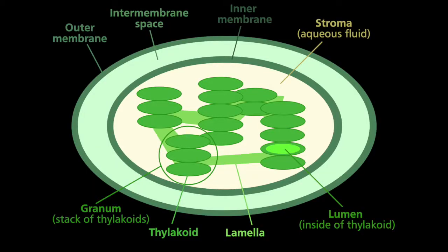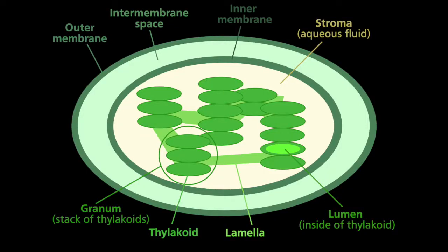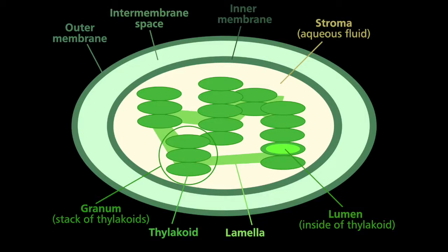If you look at a chloroplast, you have the stroma — the fluid-filled inner part — and the thylakoids, which are stacked in what's called a granum, or multiple grana. A thylakoid is like a pancake, a granum is like a stack of pancakes, and multiple grana are like multiple stacks of pancakes. Inside each thylakoid is the thylakoid lumen. 'Lumen' is a useful biology term — it refers to the inside of any membrane-bound structure, like an artery or vein. The chloroplast also has an inner membrane, intermembrane space, and an outer membrane, just as we saw for mitochondria.